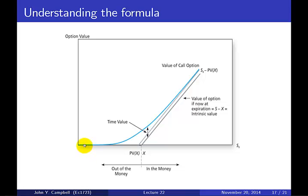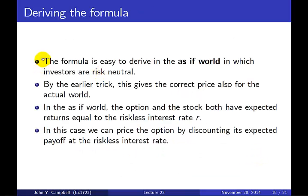Here is a picture of the value of a call option — a figure from Bode, Kane, and Marcus that we've already seen. The dark gray line is the intrinsic value. The light gray line is shifted up, representing S minus the present value of X rather than S minus X. The option value is always above the dark gray line, and the Black-Scholes formula gives a shape like the blue curved line that curves upward.